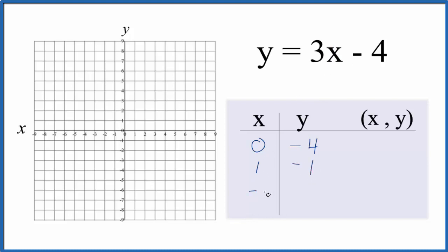And how about negative 1? 3 times a negative 1, that's negative 3, plus negative 4, that's negative 7. So these are the points that we'll graph for the line y equals 3x minus 4.